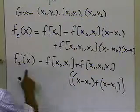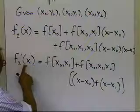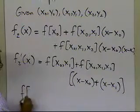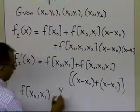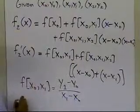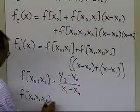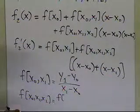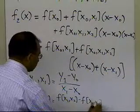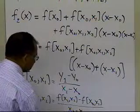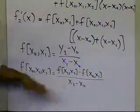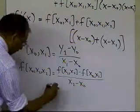Now you have the derivative expression and can find the derivative at any x between the lowest and highest given x values. The divided difference f[x0, x1] is simply (y1 minus y0) divided by (x1 minus x0). The divided difference f[x0, x1, x2] is found by taking the divided difference of x1, x2 minus the divided difference of x0, x1, all divided by (x2 minus x0) — like a recursive tree structure.